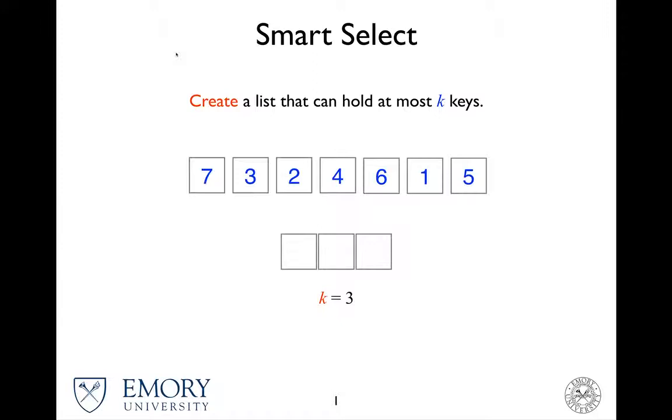Then, we actually go through the original list. 7, we try to add that key into the sublist. 3, make sure the key from the original list is actually added in descending order to the sublist. 3 goes here. 2 goes here.